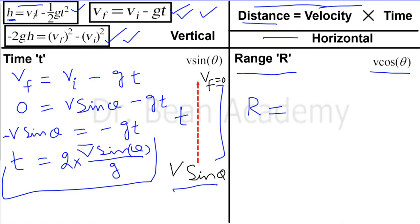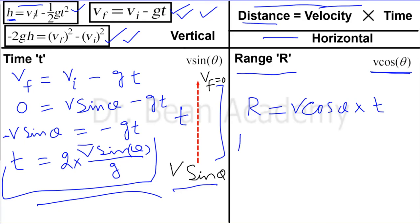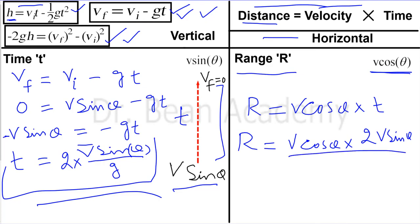Range R equals velocity times time. The velocity is v cos(theta), the horizontal component, since I am dealing only with horizontal motion. The time is the total time of flight, which I have already found. Whether you consider vertical or horizontal motion, the total time of flight is the same. So I can express the range in terms of velocity and angle theta: R = v cos(theta) multiplied by 2v sin(theta) / g.